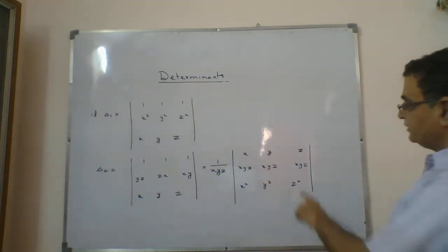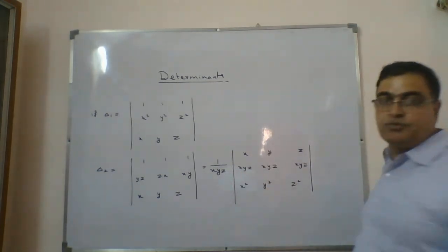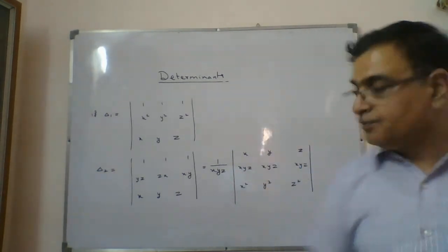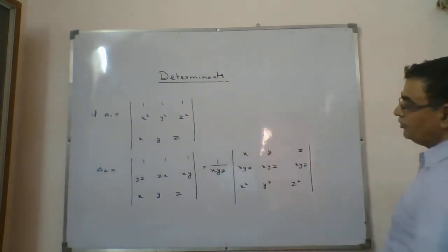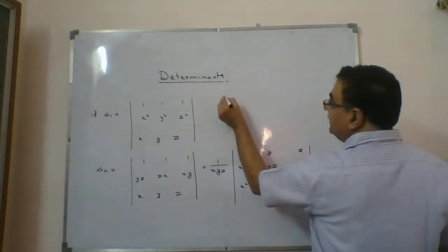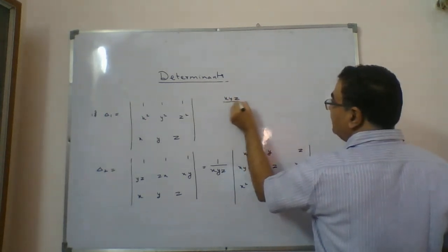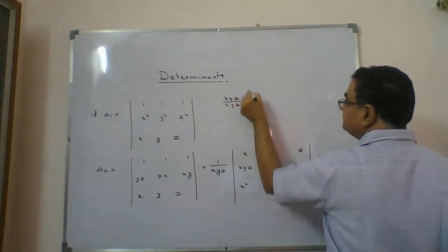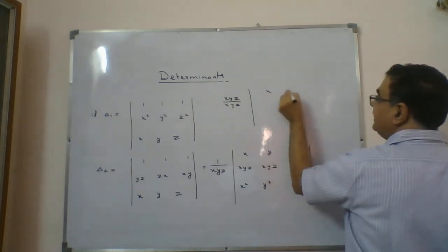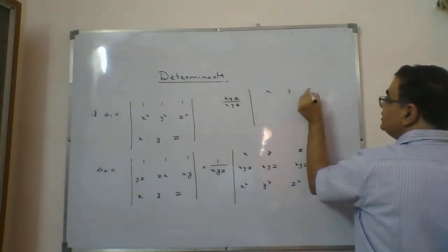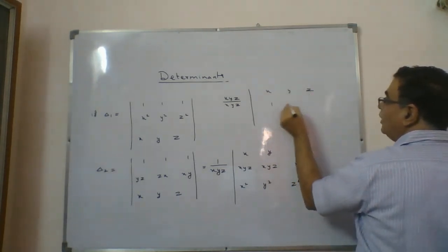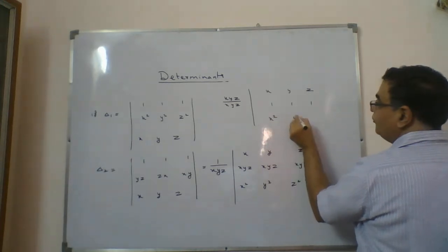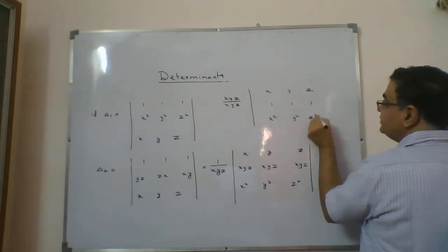After this operation, xyz is common from row 2. When you take xyz common from row 2, what is left is xyz divided by xyz. So the result becomes: row 1 is xyz, 1, 1, 1 and row 2 has x², y², z².